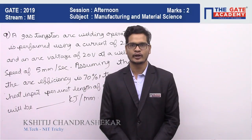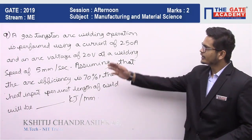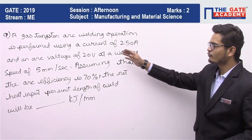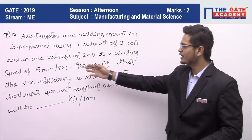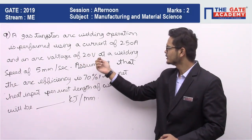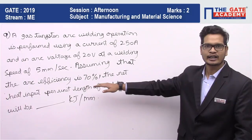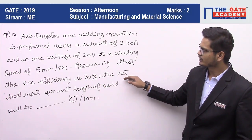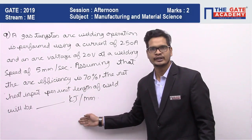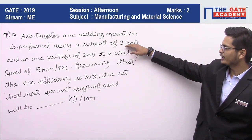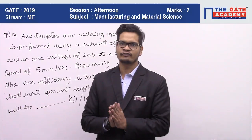Today we will be taking a question from the subject of manufacturing. The chapter is welding. The question is: a gas tungsten arc welding operation is performed using a current of 250 amperes and an arc voltage of 30 volts at a welding speed of 5 mm per second, assuming that the arc efficiency is 70%. The net heat input per unit length of the weld will be?